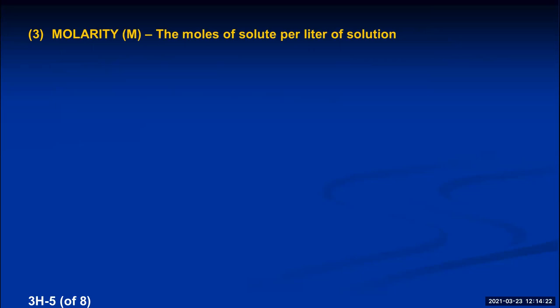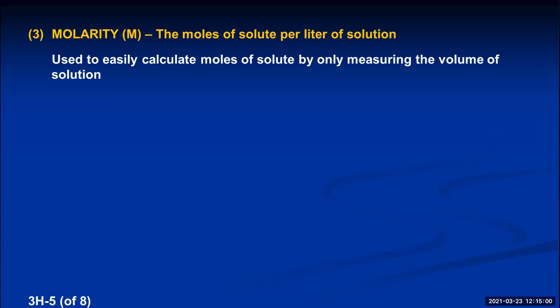The third unit — probably the most common in chemistry — is called molarity, abbreviated by a capital M, defined as moles of solute per liter of solution. Molarity was invented to give chemists a really easy way to calculate the number of moles of a dissolved solute. The only measurement you have to make is the volume of the solution, which is why chemistry labs have accurate volumetric glassware like volumetric flasks, pipettes, and burettes.